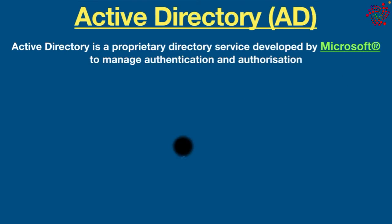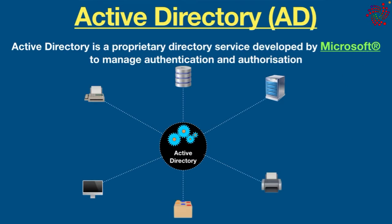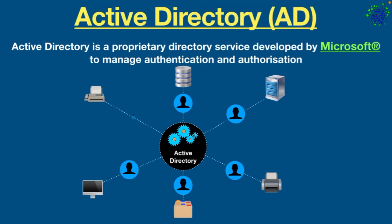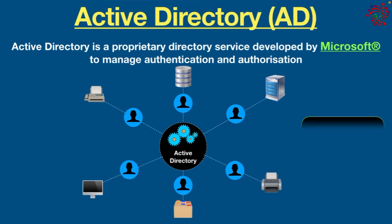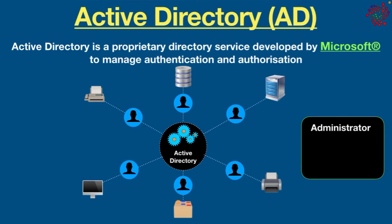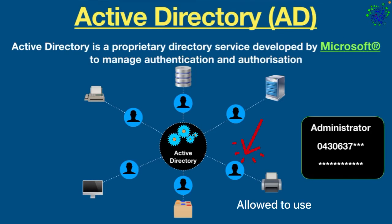Basically, Active Directory is a database and set of services that connect users with the network resources they need to get their work done. The database contains critical information about users and resources, and also records their permissions — that means who is allowed to do what in the network. For example, the database might contain a list of 100 user accounts with details like each person's job title, phone number, and password, but only a few of them would be allowed to access the resources of a printer.